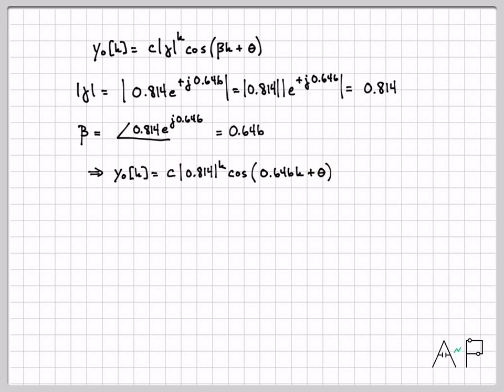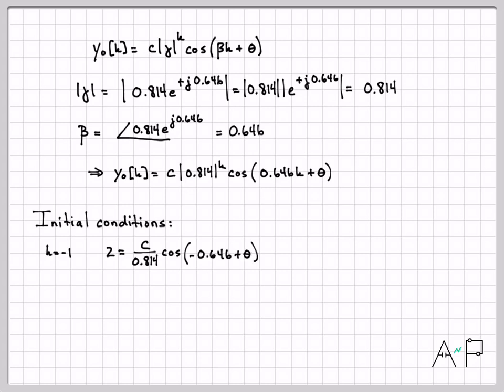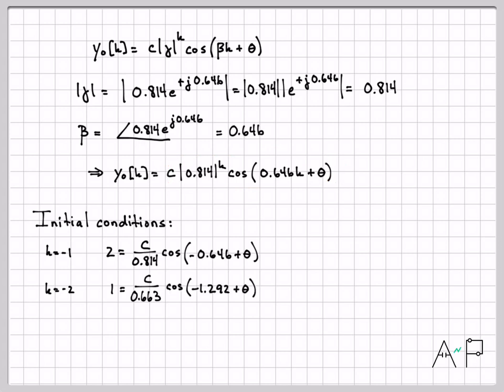The two remaining unknowns, C and theta, must be solved for using the initial conditions. One initial condition was at K = −1: substituting K = −1 into our equation and setting it equal to the given value of 2 gives our first equation. The other initial condition was at K = −2, where our signal equals 1. Setting K = −2 gives our second equation. So now the question is how to solve for C and theta.